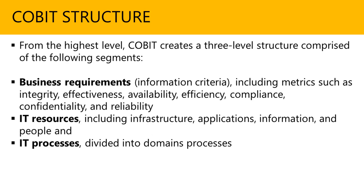Next, let's take a look at the COBIT structure itself. From the top level or the highest level, COBIT simply creates a three-level structure, which comprises of three segments. The first is business requirements. Second is IT resources. And third are the IT processes.